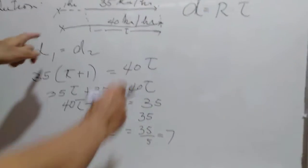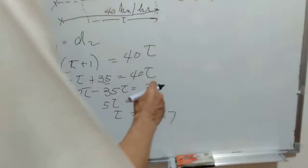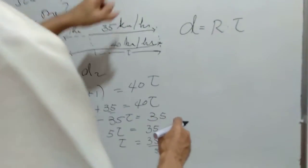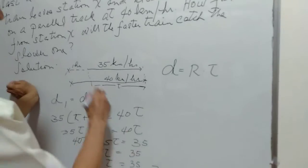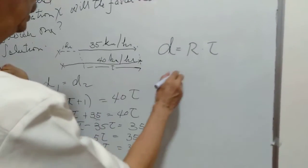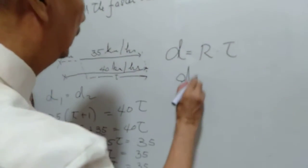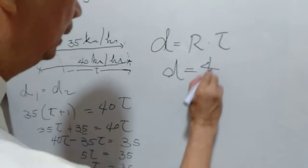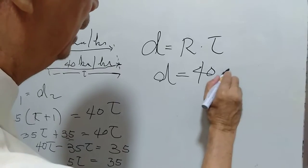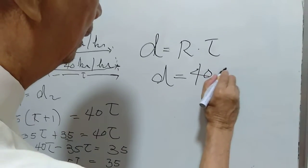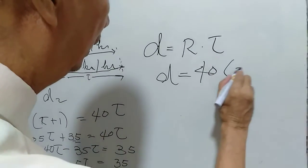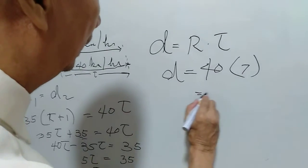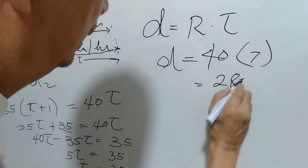Since we are asked to find the distance traveled by the faster train, the distance is equal to 40 times T, which is 7, and that is equal to 280 kilometers.